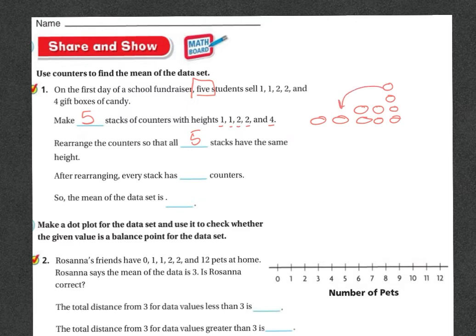So I would take this one and put it here, this one and put it here, and if I did that, then all of my stacks would have two in each one. Oops, that was too many. So after rearranging, every stack would have two counters, so the mean of this data is 2.